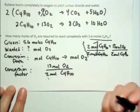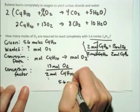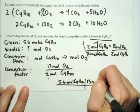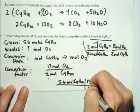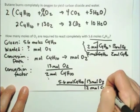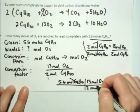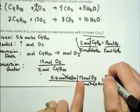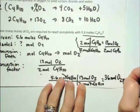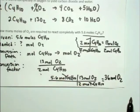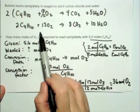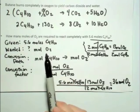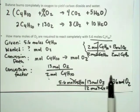To work the problem: start with what's given — 5.6 moles of butane — times the conversion factor. 13 moles of oxygen are consumed every time I combust 2 moles of butane. The moles of butane cancel and we're left with the desired units, which is moles of oxygen. When you do the math, you get 36 moles of oxygen. That's how we use our balanced chemical equation to predict, given a certain quantity of one reactant, how much of the other reactant we're going to need — in this case, 36 moles of oxygen to combust 5.6 moles of butane completely.